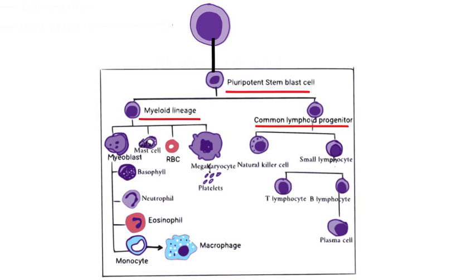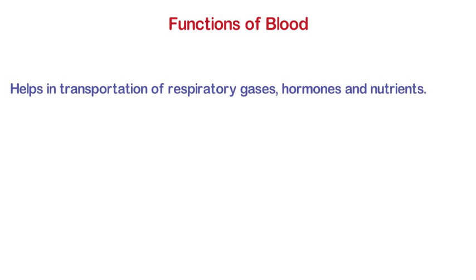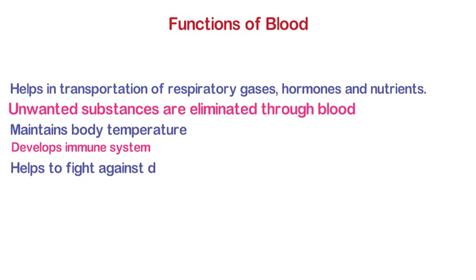Before ending, let us summarize the different functions performed by blood. Blood helps in transportation of different essential substances and removes unwanted substances. It maintains body temperature, develops immunity to fight against diseases, and helps in clotting of blood. Hope you have liked this video. For more details, visit our website examtips.com. See you again with some new topic — till then, happy learning.